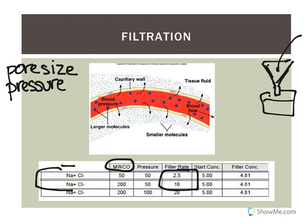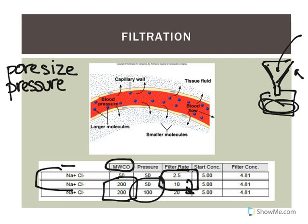Increasing pore size increases the filtration rate — just like a coffee filter with bigger holes lets water and coffee move into your cup much quicker. Then, keeping the same pore size at 200 and doubling the pressure, the filtration rate also doubles. This is exactly what a coffee maker does: it applies higher pressure to push hot water through the coffee filter faster, so you get your coffee quicker.